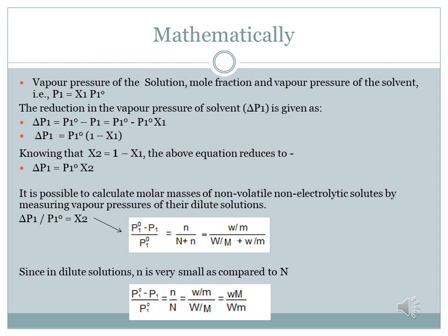We can write Δp₁ = p⁰₁ − p₁. Substituting p₁ from the above equation gives p⁰₁ − p⁰₁·x₁. Taking p⁰₁ as common: Δp₁ = p⁰₁(1 − x₁). From the previous class we know that the mole fraction of solute plus the mole fraction of solvent equals unity, i.e., x₁ + x₂ = 1. So in place of (1 − x₁) we can write x₂, giving the equation: Δp₁ = p⁰₁ · x₂.